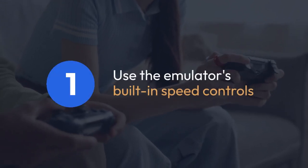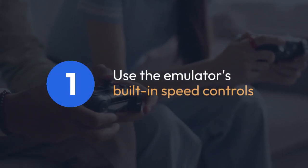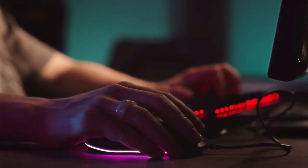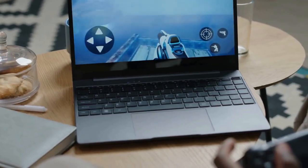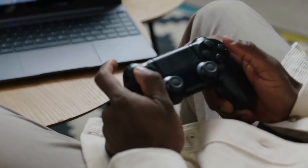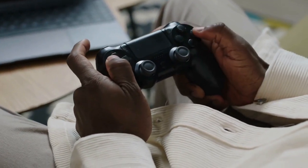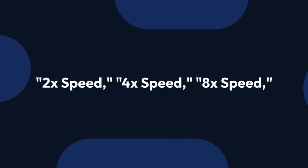One. The first and most common method is using the emulator's built-in speed controls. Look for buttons or options that control the emulation speed. Often, these are represented by icons like a tortoise for slow and a hare for fast. You might see options like 2x speed, 4x speed, 8x speed, or even higher multipliers.